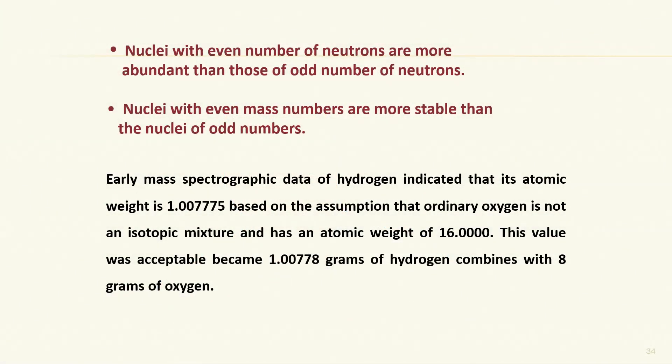Our understanding of nuclear structure became broader when we started looking at the ratio of protons and neutrons — that is how scientific discovery and development takes place. People look at different aspects of the same property and come up with new ideas regarding stability, physical properties, and chemical properties. We can make a postulate that nuclei with even numbers of neutrons are more abundant than those with odd numbers of neutrons.